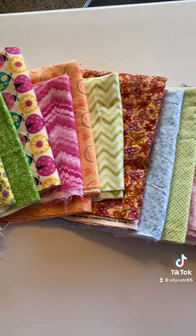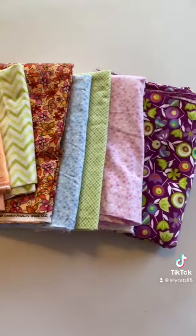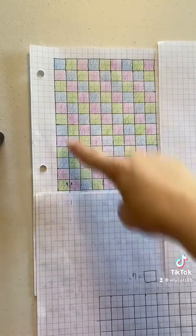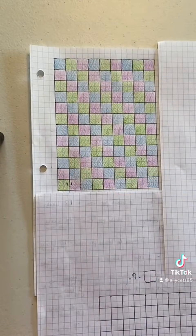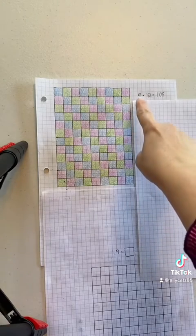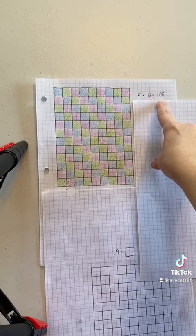First thing you need to do is measure all the fabrics you want to use. I'm going to be making a rag quilt that measures 9 blocks by 12 blocks. Each block is going to be 6 inches square. We know that 9 blocks times 12 blocks equals 108 blocks for the top of the quilt.